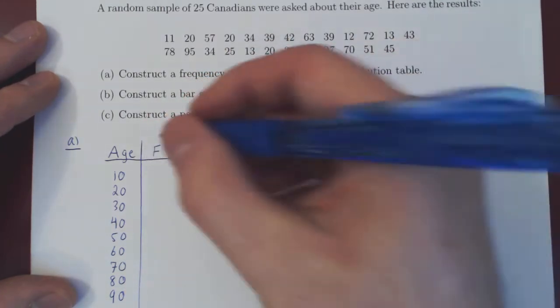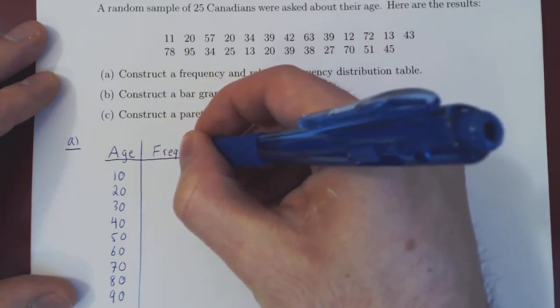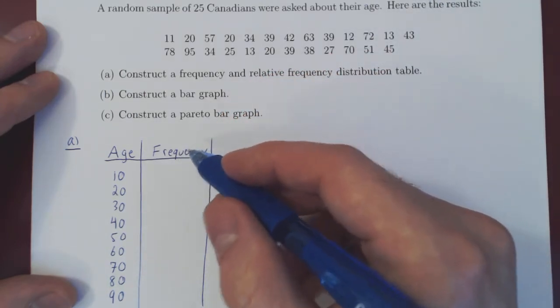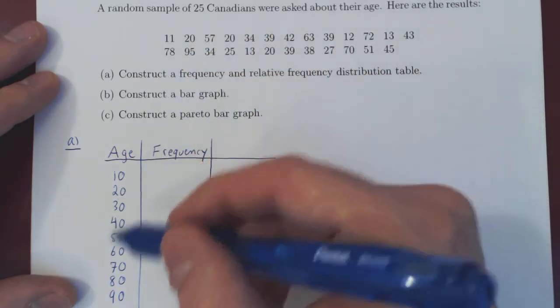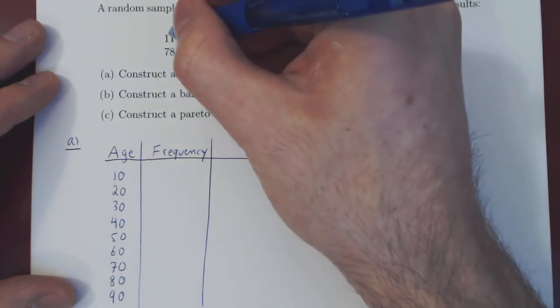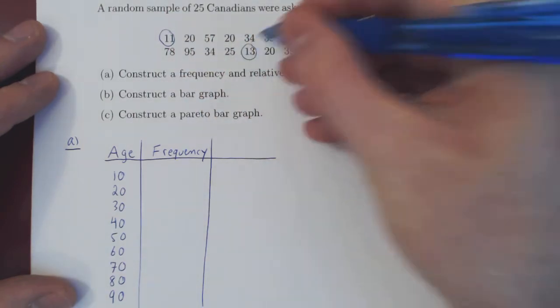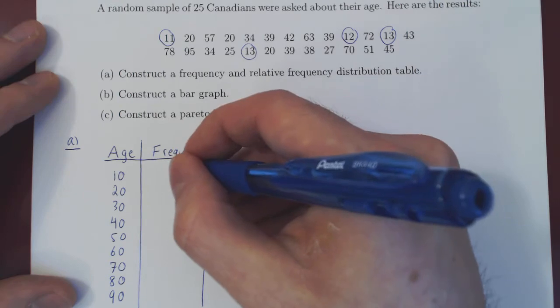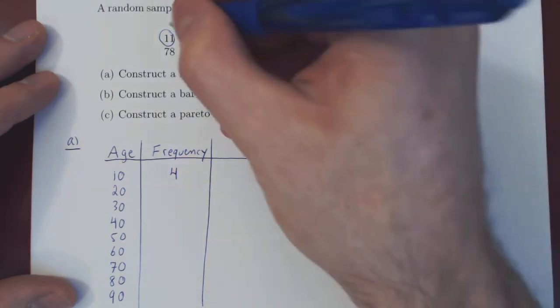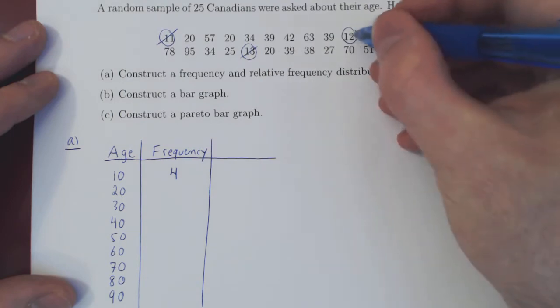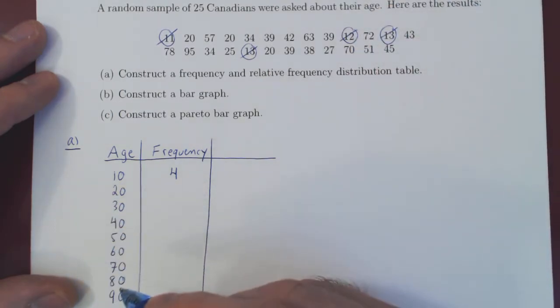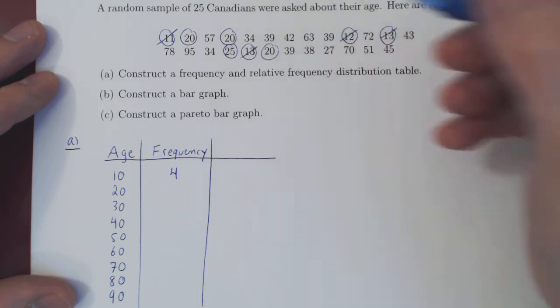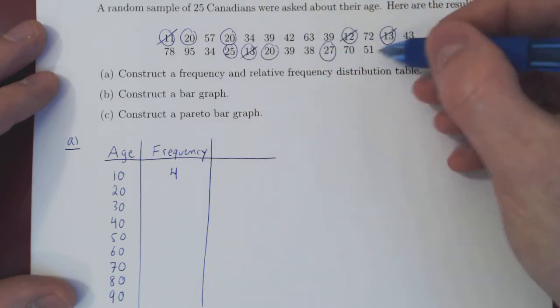Okay, so now we have our categories. Well, first construct our column for the frequency. The frequency, of course, will be how many values are in each category. So here, how many people are in their teens? Well, let's see. 11, 13, 12, and 13. So there are four people in their teens. That is our first frequency. Let's cross those out. Now, how many people are in their 20s? One, two, three, four, five. So five in total.